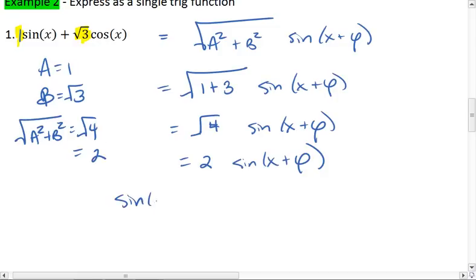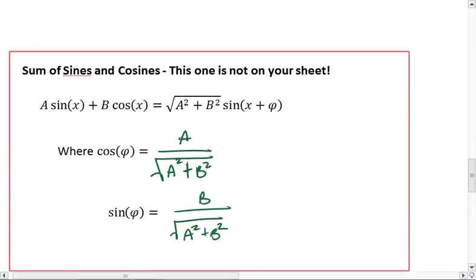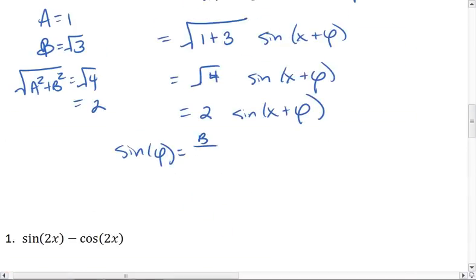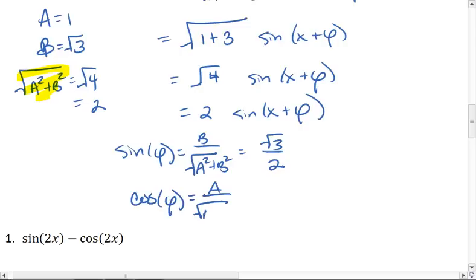So sine of phi equals our B value over this square root of A squared plus B squared. So we get square root of 3 over 2. Cosine of phi is the A value over the square root of A squared plus B squared, which turns into 1 over 2.